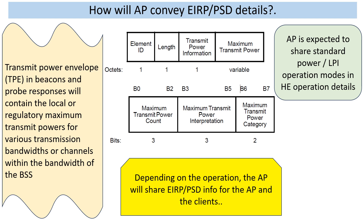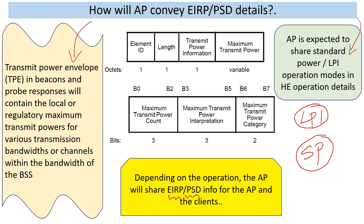The first thing is: how will the client even know if it is listening to an LPI AP versus a standard power AP? There are provisions in the 802.11 beacon and probe response frames where information about power regulations is carried in the transmit power envelope — which mode the AP is operating, LPI or otherwise. The transmit power envelope along with the country information and HE operation details should give the client information about EIRP and PSD limits, because there can be variation across regulatory domains. Not all countries follow the exact same rules. So there is information in the standard for clients to know whether they are connecting to an LPI AP or a standard power AP, and whether they are allowed to operate there.